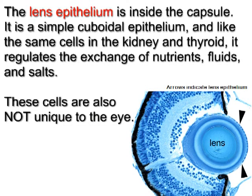The lens epithelium is a simple cuboidal epithelium, and like the same cells in the kidney and thyroid, it regulates the exchange of nutrients, fluids, and salts. These cells are also not unique to the eye.